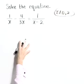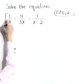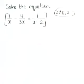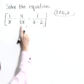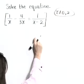Let's solve the equation. Let's begin by multiplying everything on both sides through by a lowest common denominator. Our lowest common denominator will contain an x, the number 3, and x minus 2.